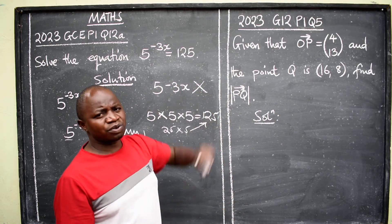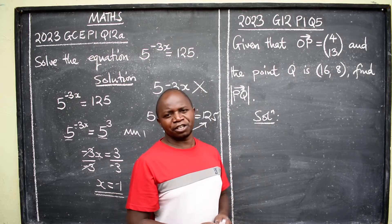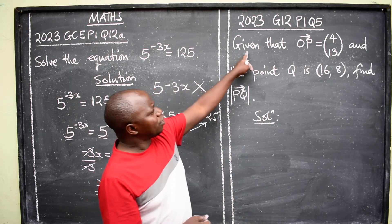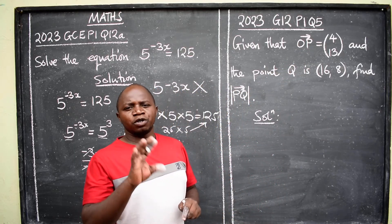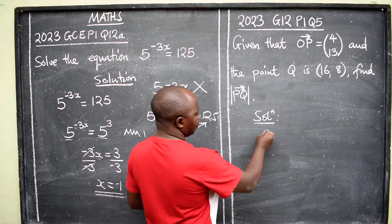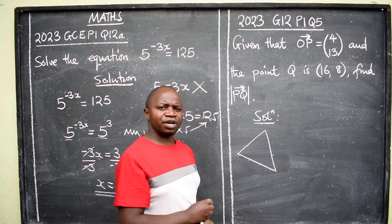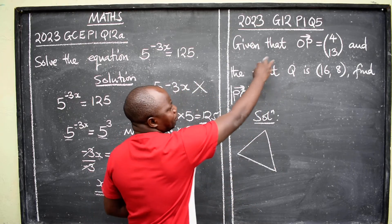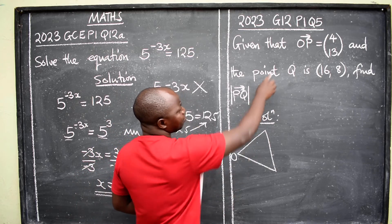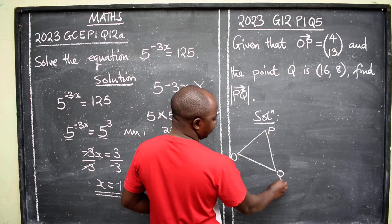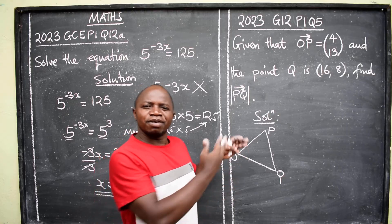Well, this question is coming from a topic called vectors in two dimensions. We are told that the vector OP, it means position vectors. So what you need to do is to come up with a triangle. Draw a triangle and put these variables or letters that you are seeing here.